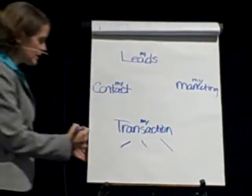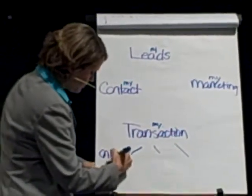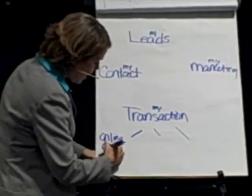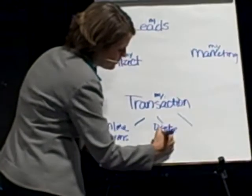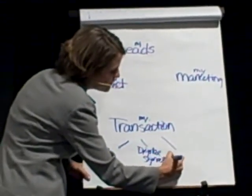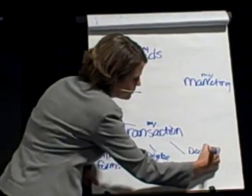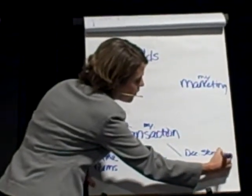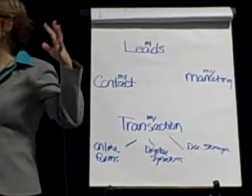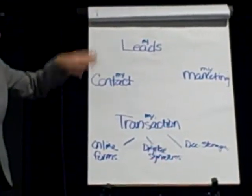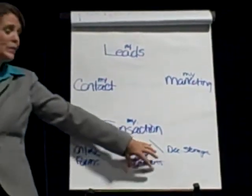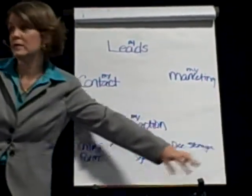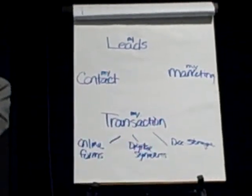So within My Transactions we've got three functions. The agents get online forms, they get digital signatures, and they also get document storage. You're probably farther along with .loop than any other region in the country. So when we look at My Transactions, they're replacing an online form system, a digital signature system, and a document storage system with one tool, which is coming from the vendor .loop.